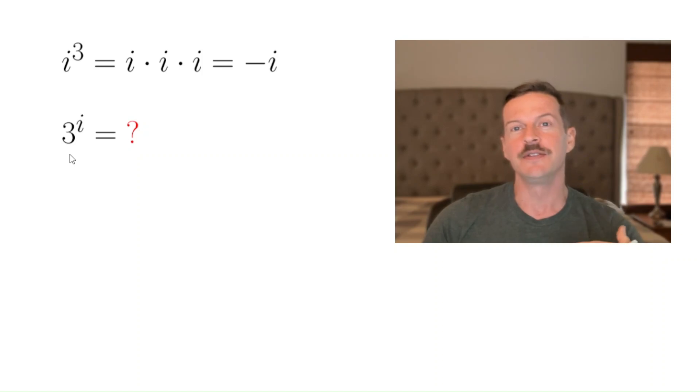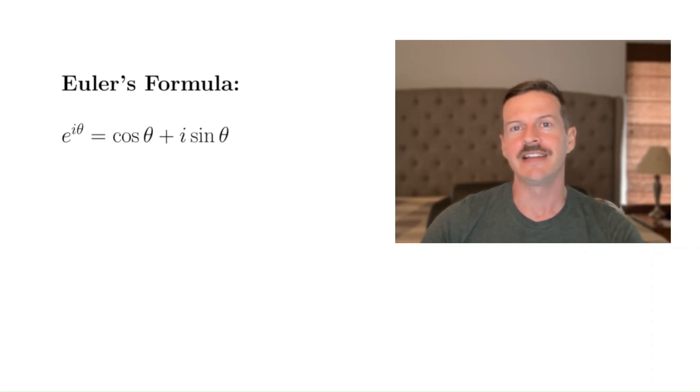Well, to do that, we're going to have to use Euler's formula. And Euler's formula is this wonderful little identity that says e to the i theta equals cosine theta plus i sine theta.